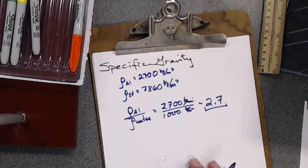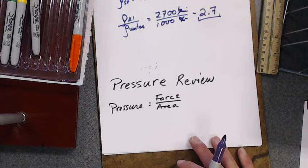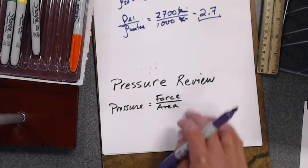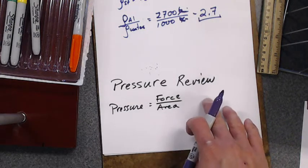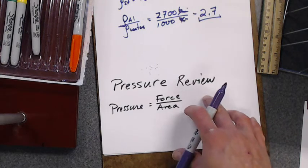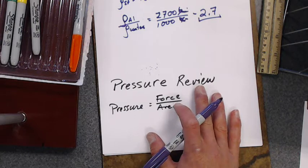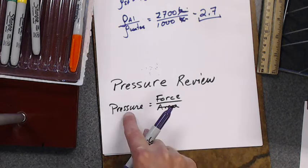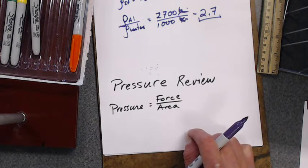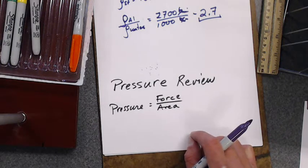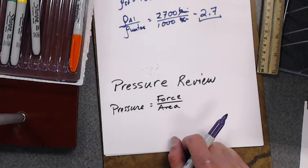We'll use specific gravity occasionally. Now let's do a pressure review. Pressure is force over area — it's how much force over how much area. You could push really hard with a very large area and have a low pressure, or you could have a very small force with a very small area — a reasonable force with a small area — and have some pretty high pressure.